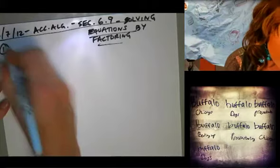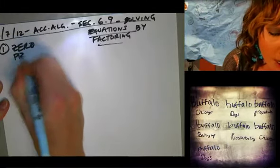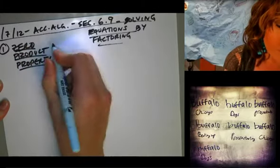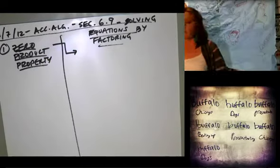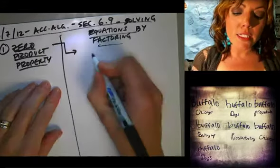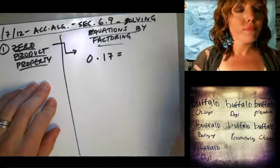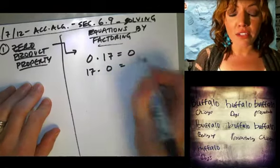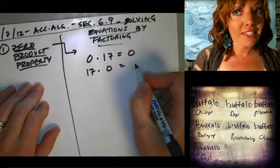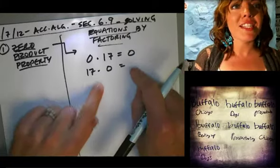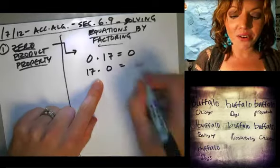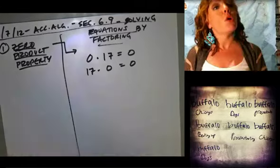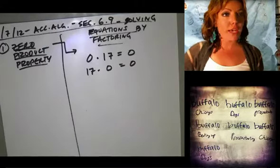So let's first really quickly review what's called the zero product property. Okay, so you guys tell me, what is zero times 17? Zero. What is 17 times zero? Zero. So how many people would agree that regardless of where the zero is, if you multiply anything times zero, you get zero. Is that true? Yes.